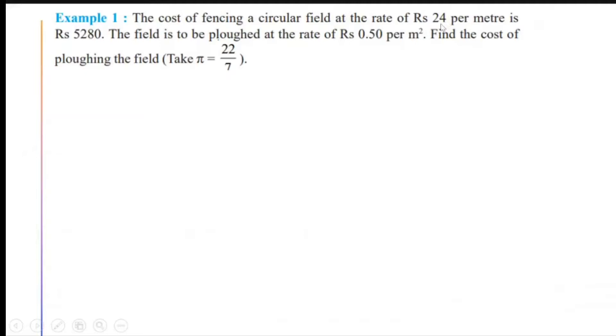If I multiply Rs 24 to that, I will get the total cost. So, to find out the length of the fence, if I divide the total cost upon the cost per meter, I will be getting the length of the fence and that length will be equal to the circumference of the circular field. So let us do that.